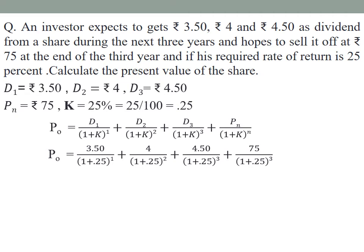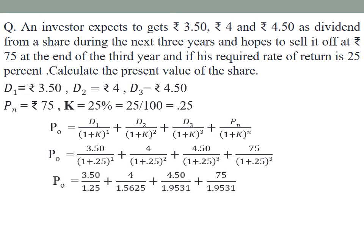So the dividend discounted is 4.50 divided by 1.25 raised to 3, and the principal discounted is 75 divided by 1.25 raised to 3. Solving this equation: P0 equals 3.50 divided by 1.25, plus 4 divided by 1.5625, plus 4.50 divided by 1.9531, plus 75 divided by 1.9531. This gives 2.80 plus 2.56 plus 2.30 plus 38.40. The sum of dividends and principal present values gives the intrinsic value of the share.